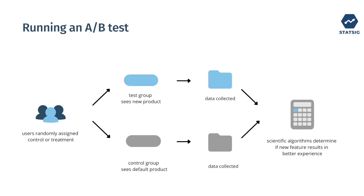Say we launch a new product recommendation algorithm. We might find that the new algorithm increases engagement with the app by enabling users to find their preferred products. A-B testing enables us to determine true cause and effect relationships between the changes we make and the effects that we see in user behavior.